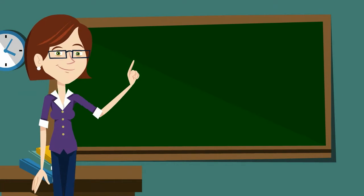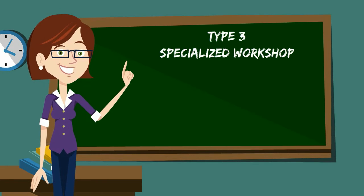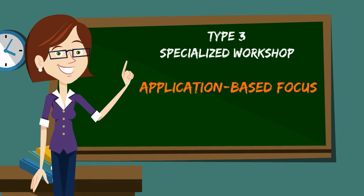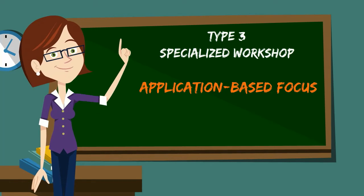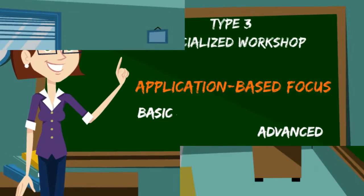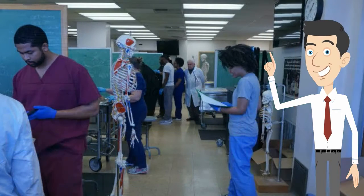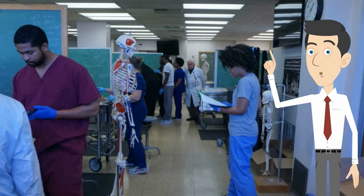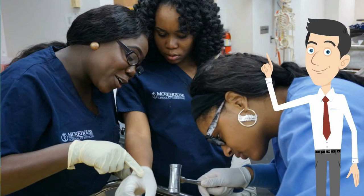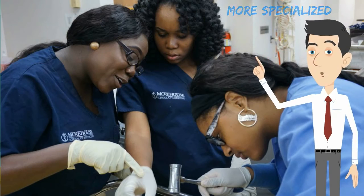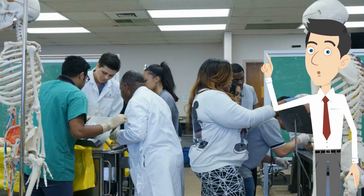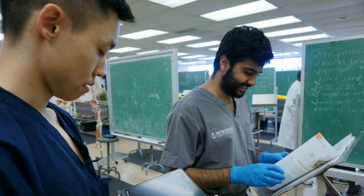The third type of clinical correlation is a specialized workshop. Specialized workshops have an application-based focus, are more specialized than typical laboratory sessions, and range in complexity from basic to advanced. These clinical correlations consist of a specialized or simulation lab session that may be conducted over an entire morning or afternoon. Students directly participate in activities that are more specialized than routine laboratory sessions. They can also be used for students moving into clerkships to help them connect multiple basic science concepts and apply them to the clinical setting.